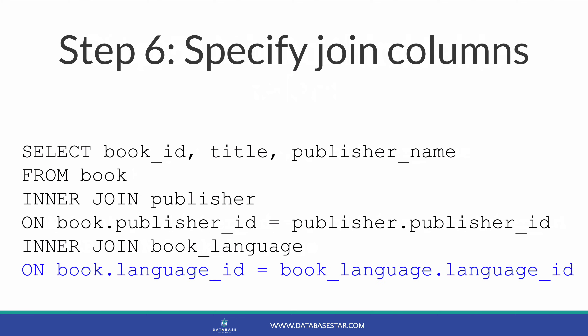Now we've added the table, we add the columns we want to join on. We specify the column from this table, as well as the column from either of the tables we've already added. We can join to either the book table or the publisher table — it doesn't matter; it depends on how our tables are linked. In this example, we want to join to the book table, as that's where the language ID is located. So our query would look like this: INNER JOIN book_language ON book.languageId equals booklanguage.languageId.